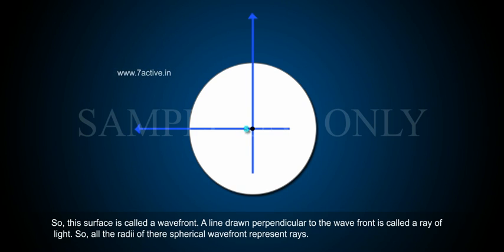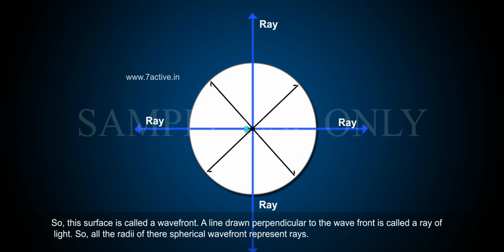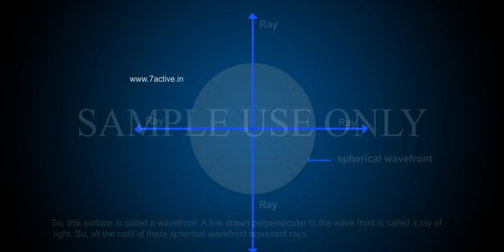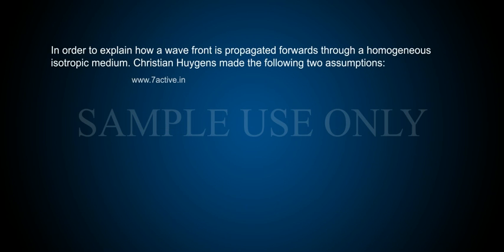A line drawn perpendicular to the wavefront is called a ray of light. So, all the radii of the spherical wavefront represent rays. In order to explain how a wavefront is propagated forwards through a homogeneous isotropic medium,